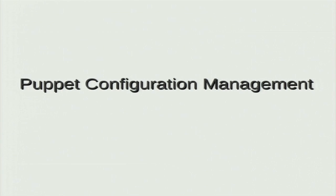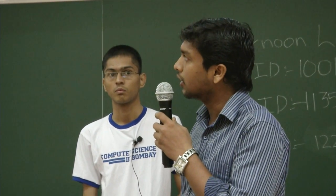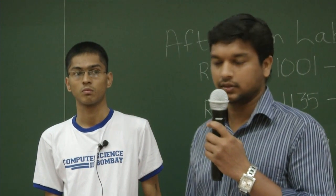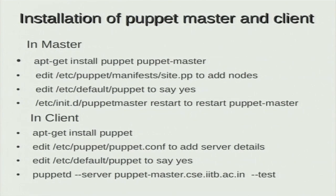Looking at this diagram, host1, host2, and host3 represent our lab machines — we have over 200 machines in the lab. That Puppet Server is called the Puppet Master. When a host wants to install some packages, it contacts the puppet server and the required packages get installed. There are installation procedures shown here; we had planned to show the full demo but due to time constraints we'll jump to the last step.